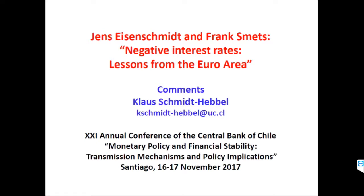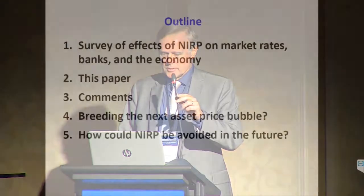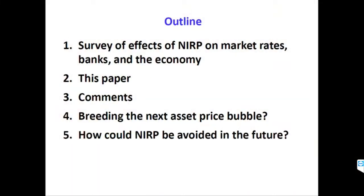This paper provides systematic evidence on the effects of the world's largest economy pursuing a negative interest rate policy — NIRP — for the last three years. The paper presents very insightful new evidence on the effects of NIRP, particularly on banks. I will extend his survey of the effects of NIRP on market rates, banks, and the economy, and then make three comments on the paper.